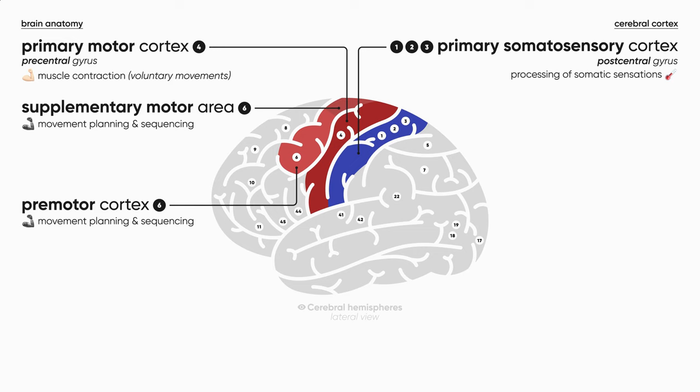Let's move a little bit anterior. Area number 8 is the frontal eye field, involved in voluntary rapid or saccadic eye movements. The term saccadic means rapid, simultaneous eye movements in the direction we need — for example, when we track across the page from one line to another while reading.